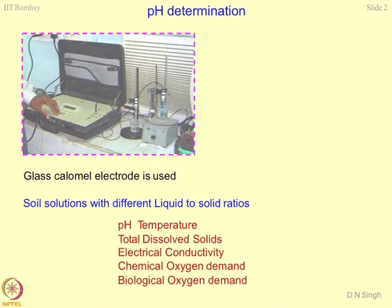This instrument is a very good tool to determine pH of the soil solution. You have to prepare a soil solution corresponding to a liquid-solid ratio, then filter out the liquid part kept in a beaker, and the glass calomel electrode is dipped into it so you can read the result directly. However, pH normally gets influenced by temperature, so this instrument also records temperature simultaneously. Normally pH values are reported at room temperature, 25 degrees centigrade, and you can apply correction if the temperature differs.